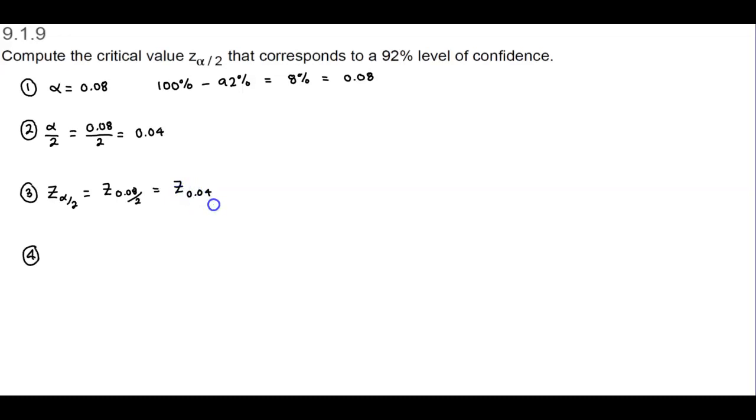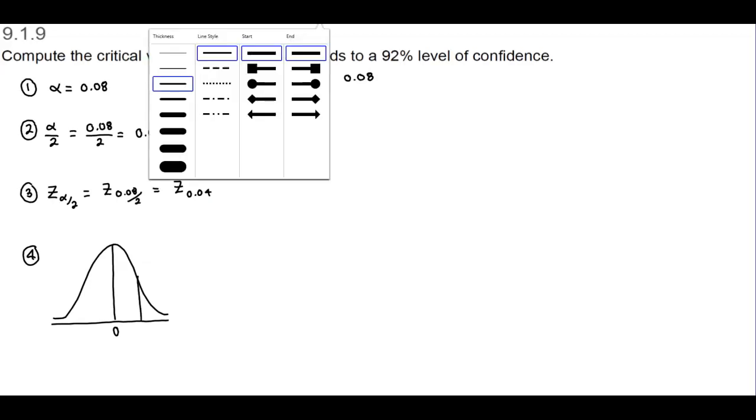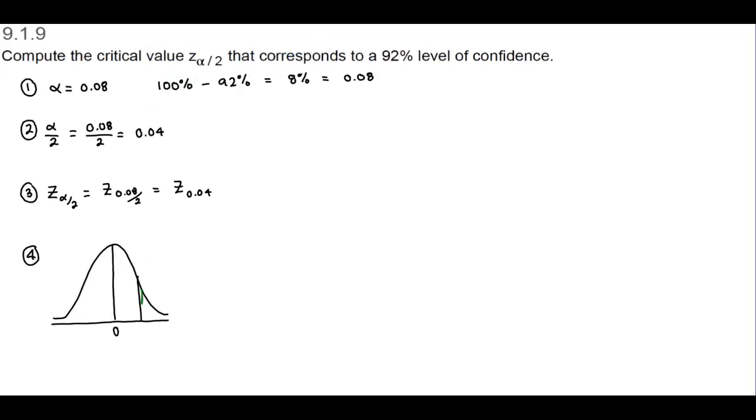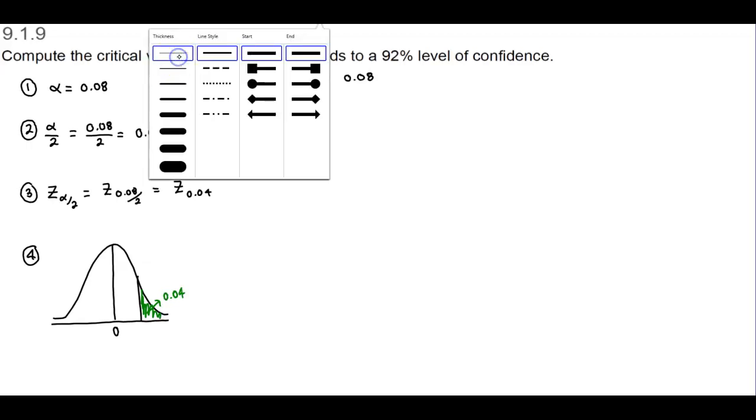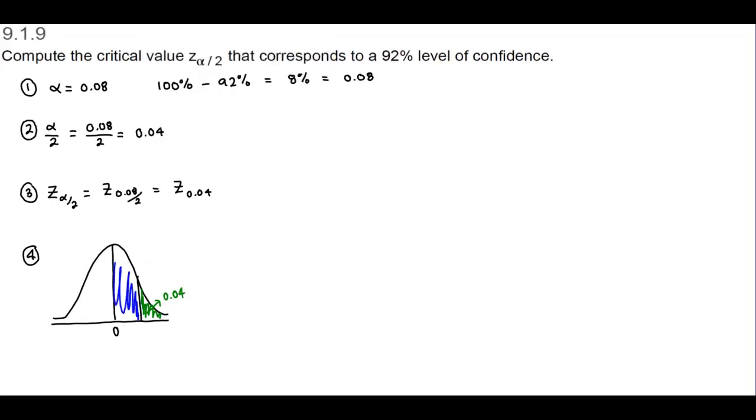Recall that we have our normal distribution here. What it says is that the area to the right of this represents 0.04. When we get a Z score, if we want to know what that Z score is, we want the area to the left.